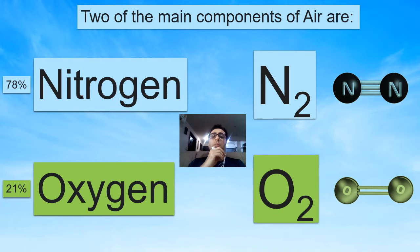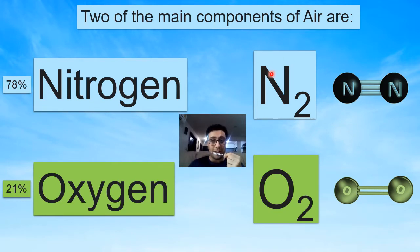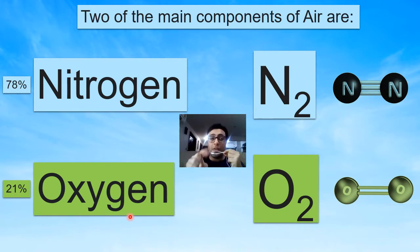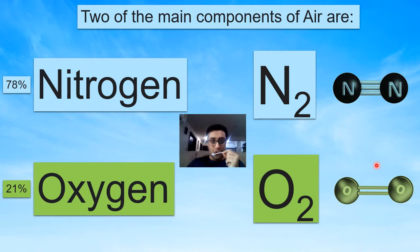So the two main components of air are nitrogen — 78%, or N2, that's its chemical name. It looks like this: nitrogen, nitrogen. And 21% oxygen, the one that we breathe in. If we don't have oxygen, we die, so it's very important. O2 — it is two oxygens. So these are the two main components of air.